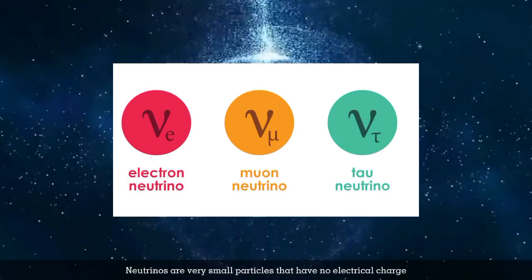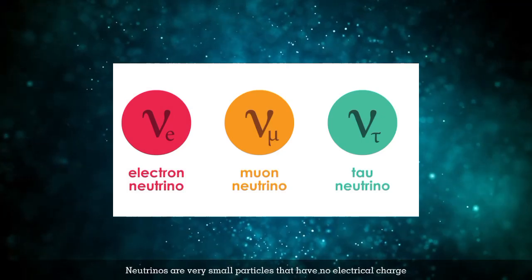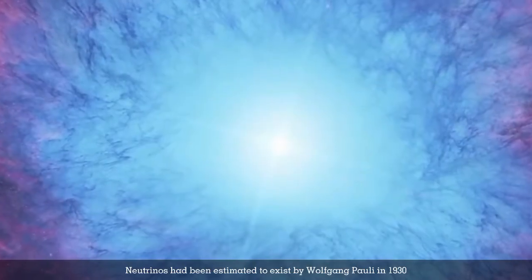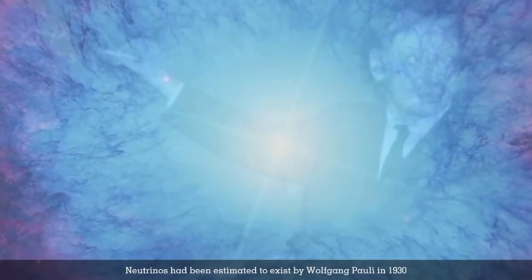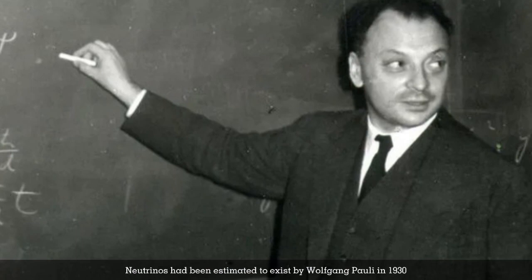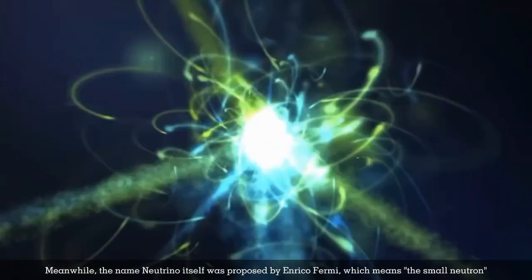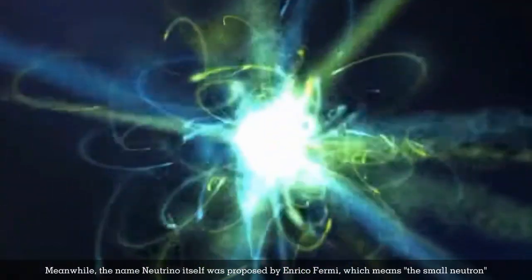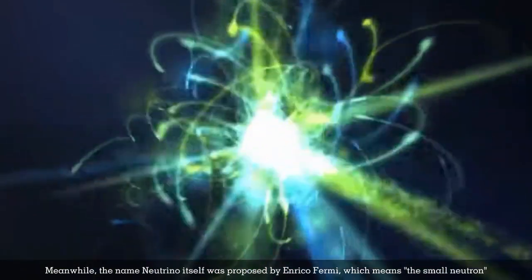This material is neutrinos. Neutrinos are very small particles that have no electrical charge. They were first hypothesized by Wolfgang Pauli in 1930. The name neutrino was proposed by Enrico Fermi, meaning 'the small neutron.'